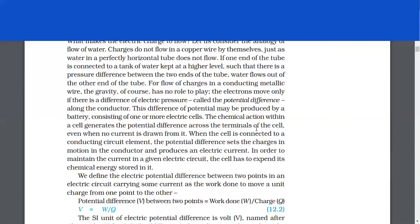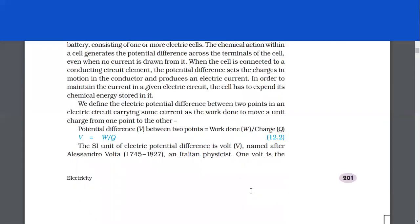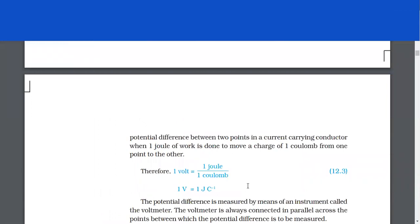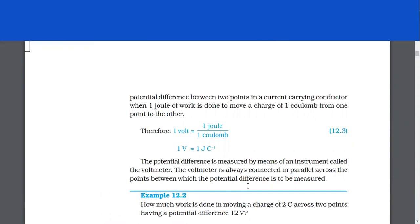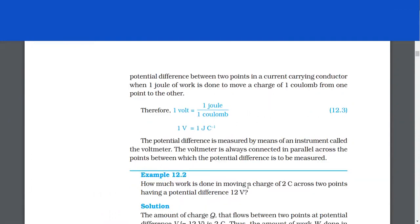When the cell is connected to a conducting circuit element, the potential difference sets the charges in motion in the conductor and produces an electric current. In order to maintain the current in a given circuit, the cell has to expend its chemical energy stored in it. We define the electric potential difference between two points in an electric circuit carrying some current as the work done to move a unit charge from one point to the other. Potential difference = work done / charge. The SI unit of electric potential difference is volt, named after Alessandro Volta, an Italian physicist. One volt is the potential difference between two points in a current-carrying conductor when one joule of work is done to move a charge of one coulomb from one point to the other. The potential difference is measured by means of an instrument called the voltmeter. The voltmeter is always connected in parallel across the points between which the potential difference is to be measured.